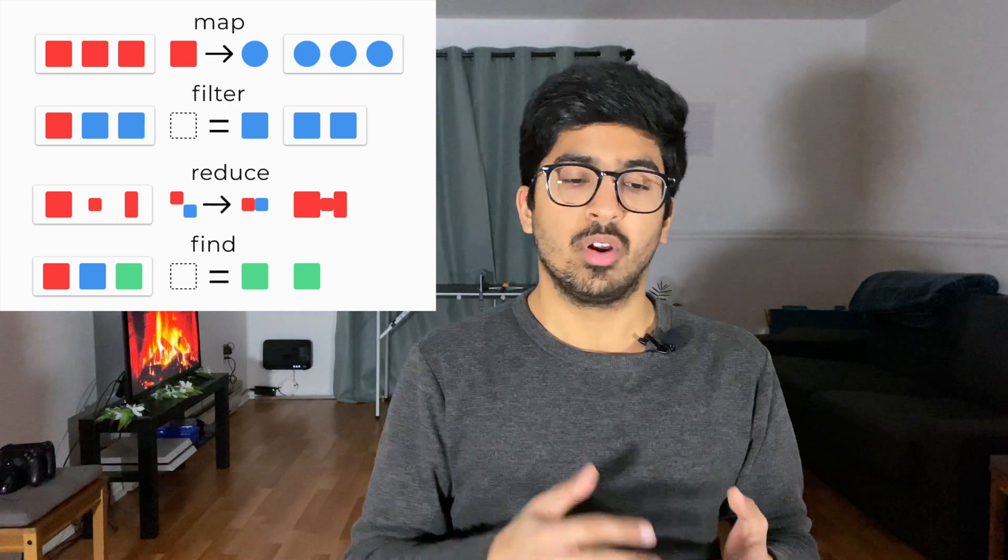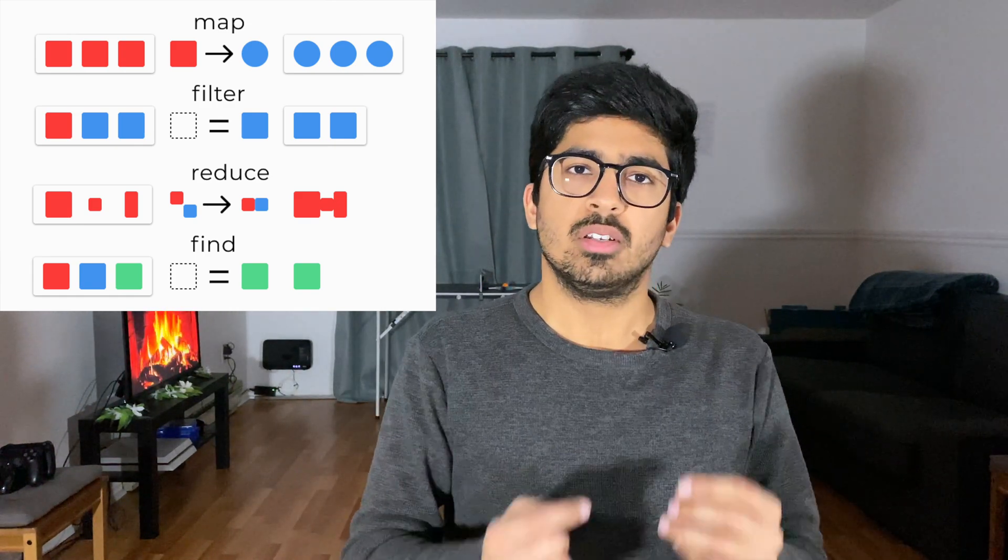Now it's important to notice that two methods out of these four give us an array and two give us a single element. For example, map and filter will return us an array in the end. That is very important to understand. However, reduce and find might or might not return us an array depending on what is stored inside it. However, you can assume that they will return us an element in the array and not the actual array. Now let's dive into the code.